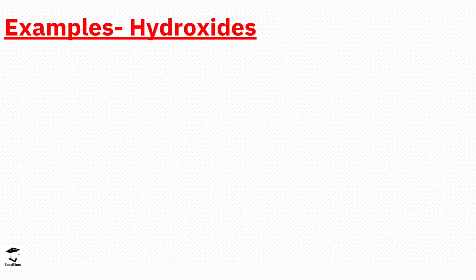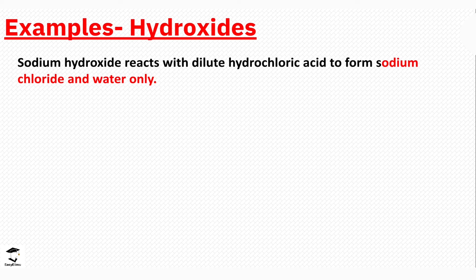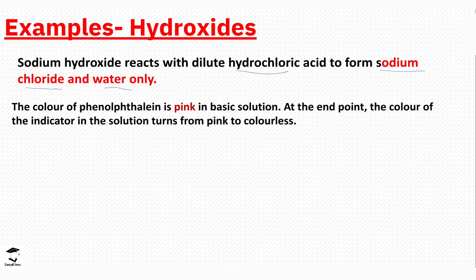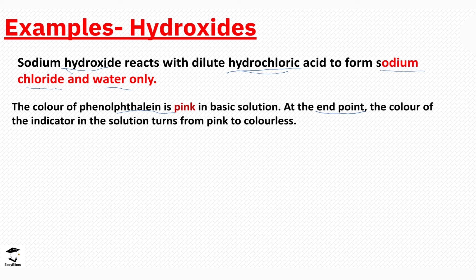When it comes to bases, we have oxides and hydroxides. Starting with hydroxides: an example is sodium hydroxide. When you react sodium hydroxide with dilute hydrochloric acid, you form a salt — which is a derivative of the acid — and water only. In this reaction we use phenolphthalein indicator to indicate the end point. Sodium hydroxide is in aqueous solution and is colorless; hydrochloric acid is also aqueous and colorless. If you mix these two, you are not able to tell if the reaction is complete without something to indicate that, and we use phenolphthalein for that purpose.